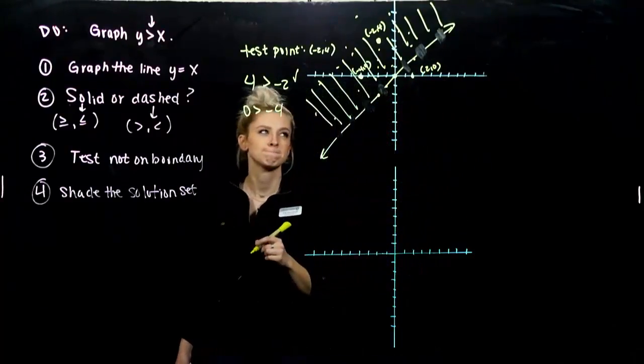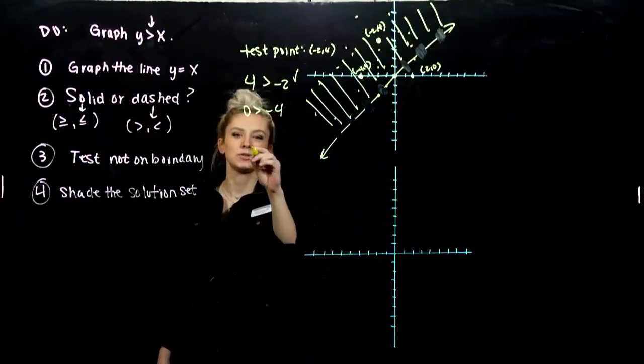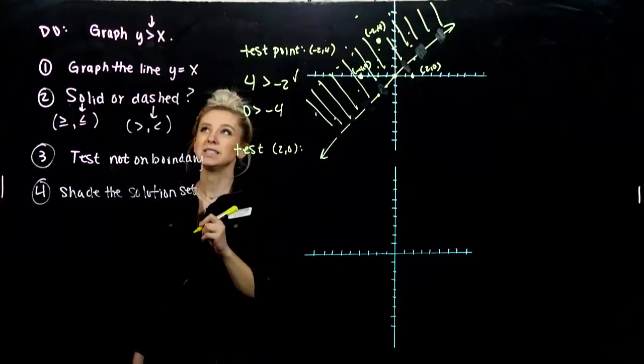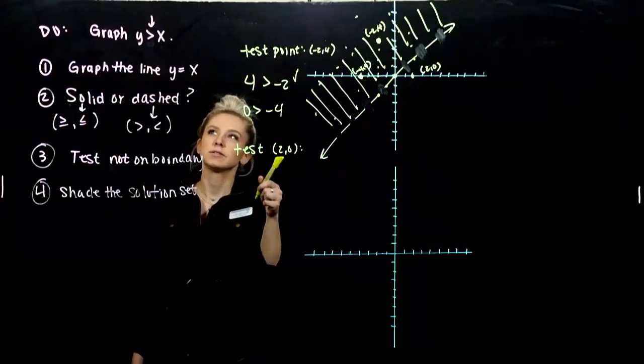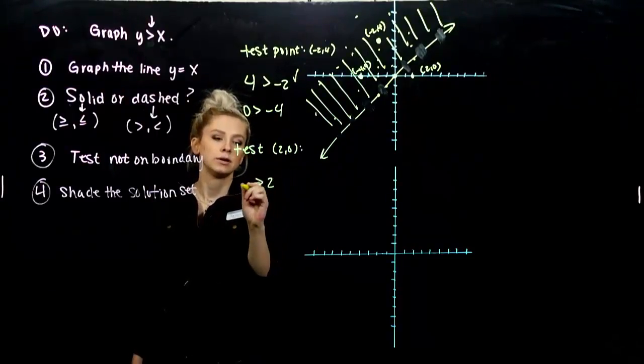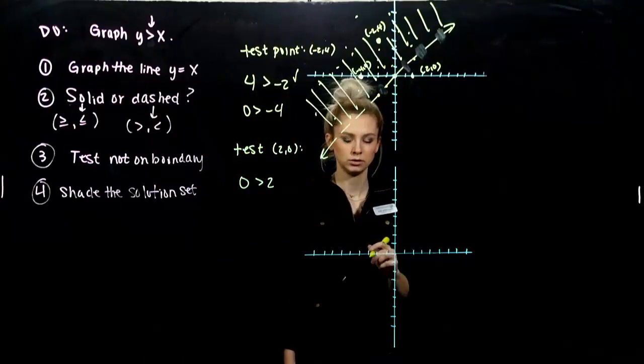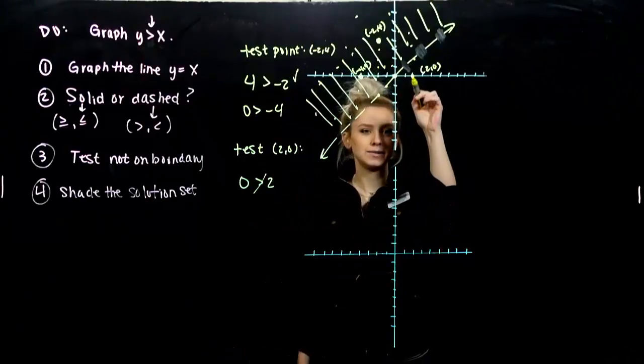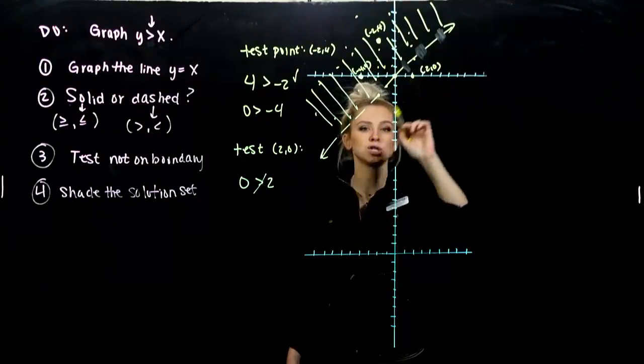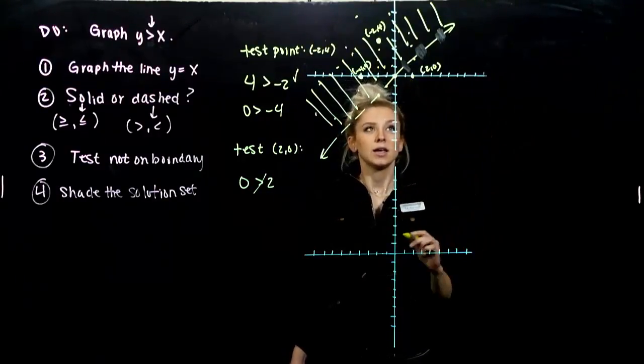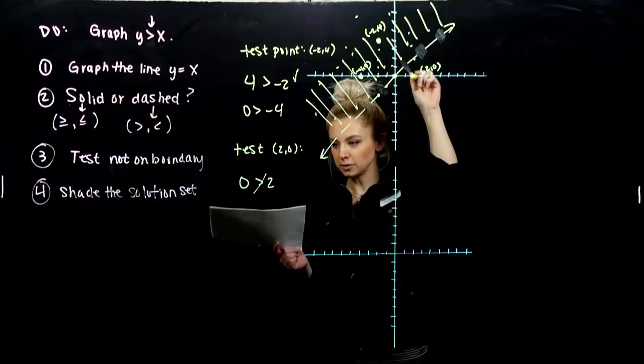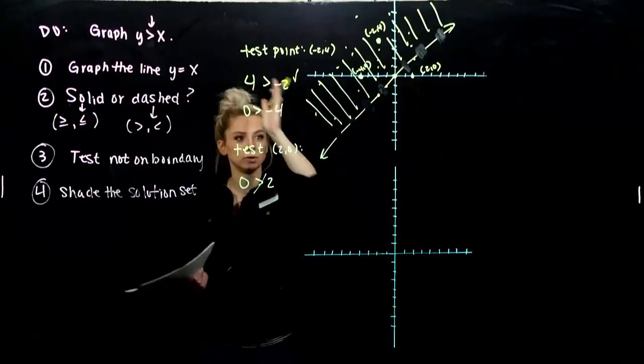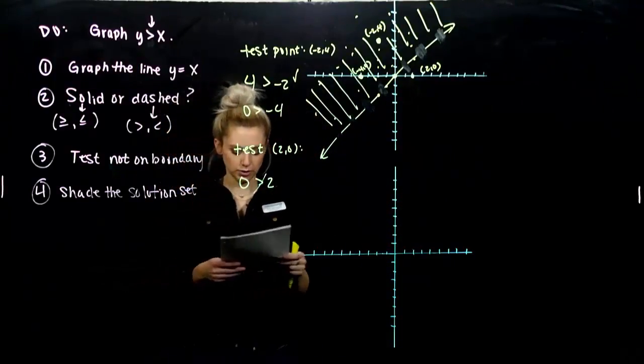Easy numbers to plug in. So when I test two, zero, does it satisfy my inequality? So x was two. Is zero greater than two? It's not. It's not true. So that point is not in my solution set. So I'm not shading anything over here. If you chose that test point and it came out to be false like it did, that would tell you, shade the upper half plane. All of those points are solutions.